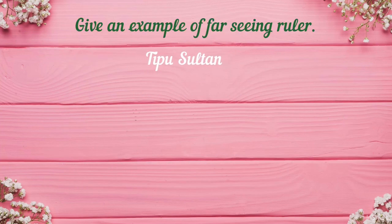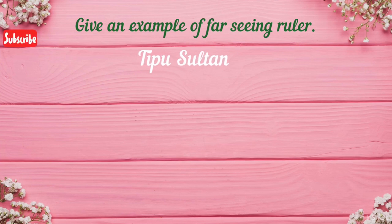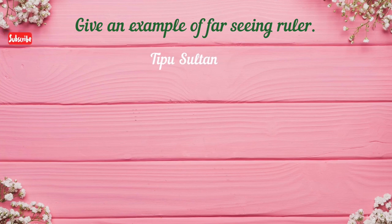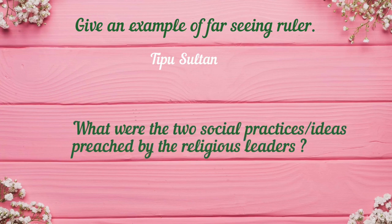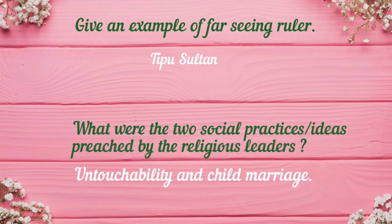Give an example of a far-seeing ruler. Tipu Sultan is an example of a far-seeing ruler who recognized the real intentions of the British and fought against them till his death.